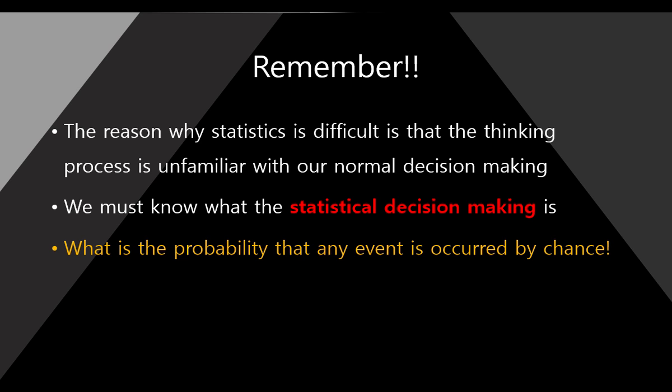The key point is this: what is the probability that an event occurred by chance? If it occurred by chance, then there is no causal relationship. But if it did not occur by chance, then there will be a causal relationship between them — cause and effect. So statistical thinking means asking: what is the probability that an event occurred by chance?